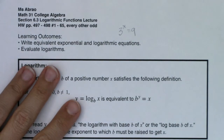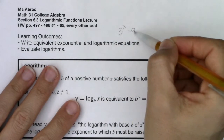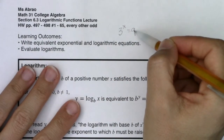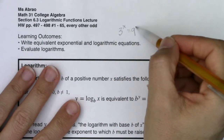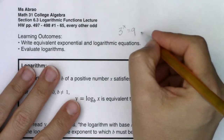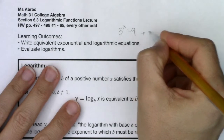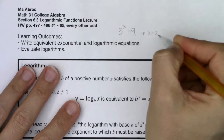If you took a look at that, it would be relatively easy to solve for x because 9 can be written as a power of 3 — this is 3 squared. So you would tell me, no problem, x equals 2.